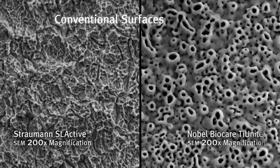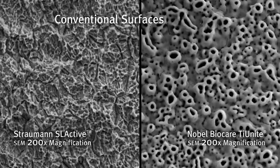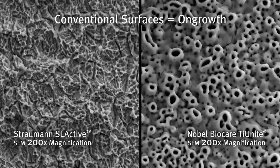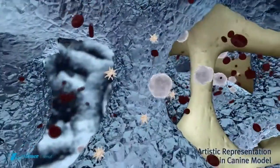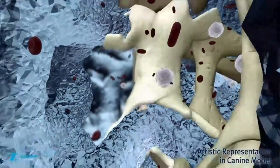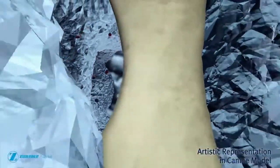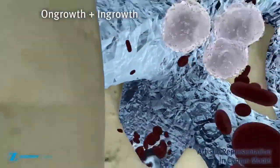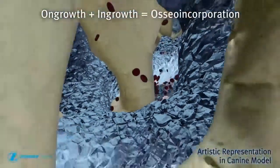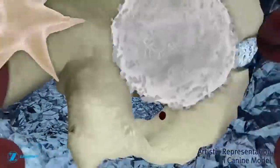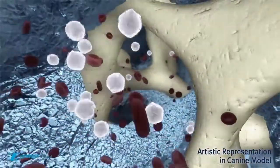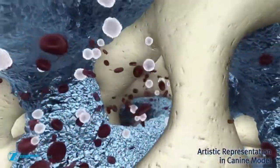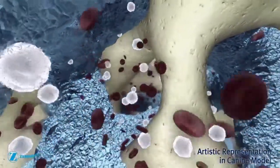Conventional textured or coated implant surfaces achieve bone-to-implant contact or on-growth. However, trabecular metal material's consistent open and interconnected network of pores is designed for both bone on-growth and bone in-growth, or osseo incorporation. Bone has the potential to not only grow into the pores and around the struts, but also onto the nano-surface of the struts.